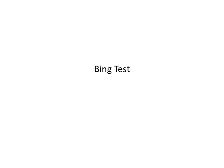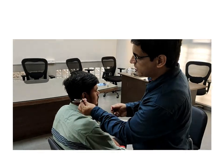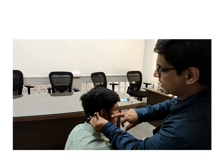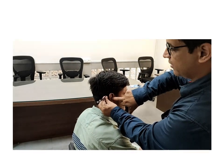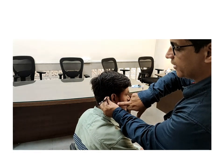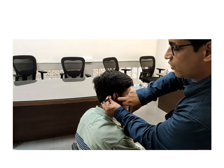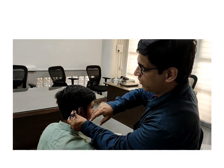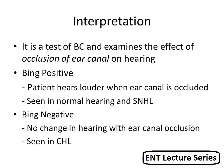In this video I will describe the Bing test, which is a tuning fork test. For the Bing test, we see the effect of occlusion of the ear canal on bone conduction. To do this test, we charge the tuning fork, place it over the mastoid bone of the patient, and then alternatively close and open the canal. We ask the patient whether closing or occluding the ear canal is improving the hearing or not.